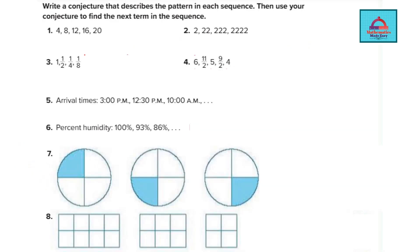In this video you have to write a conjecture which describes the pattern in each sequence. If you see carefully, in each of these questions 1 to 8 there is a pattern which is followed in every sequence. You need to find that pattern then use your conjecture to write the next terms in the sequence.